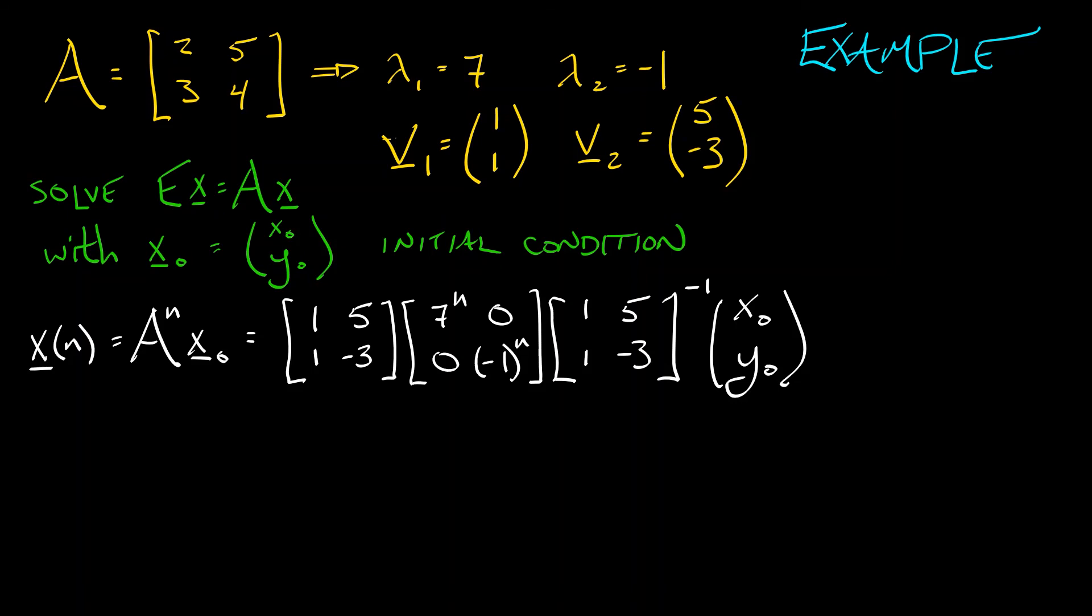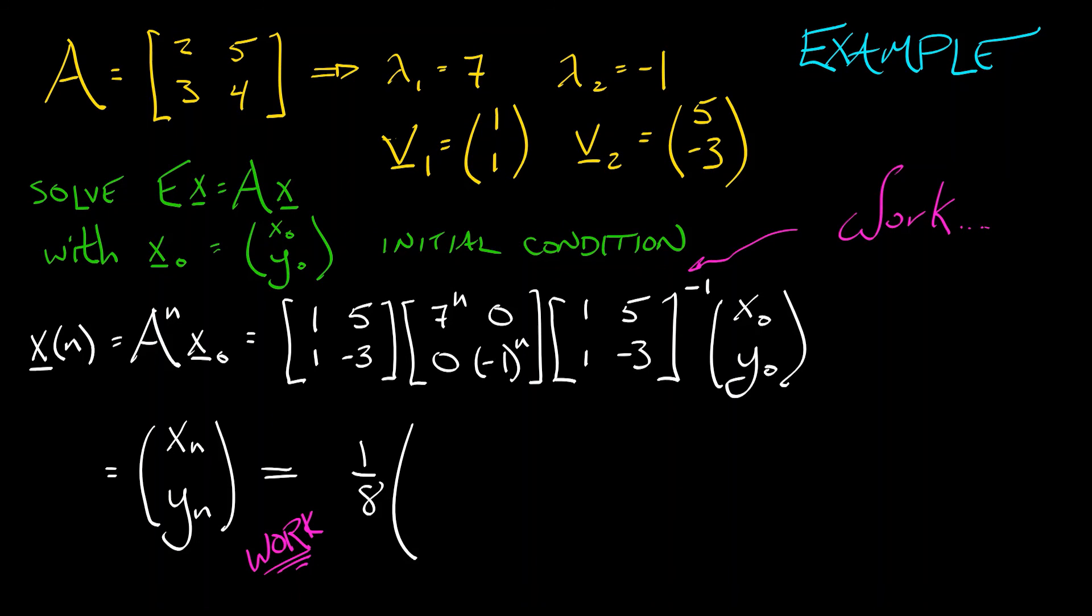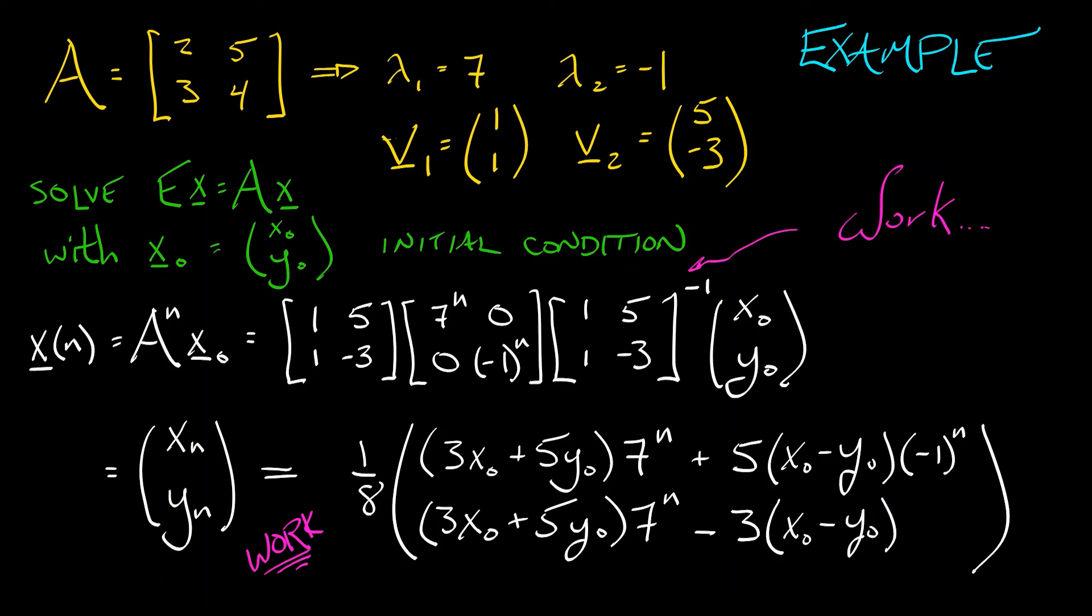Then I multiply this whole thing by the initial condition on the right. Now computing that inverse is going to take a little bit of work. Doing all this matrix multiplication is going to take a little bit of work. But if you do that, then in the end you get explicit solutions for xn and yn. These are one eighth. I got to pull out that constant that we get from taking the inverse of this matrix. I get one eighth times the first output is quantity 3x0 plus 5y0 times 7 to the n plus 5 times quantity x0 minus y0 times negative 1 to the n. And then for the second output, for the yn term, I get quantity 3x0 plus 5y0 times 7 to the n minus 3 times quantity x0 minus y0 times negative 1 to the n. You can see how that matrix multiplication and that inverse contributes to this solution, but that's it. It's explicit. We're done.